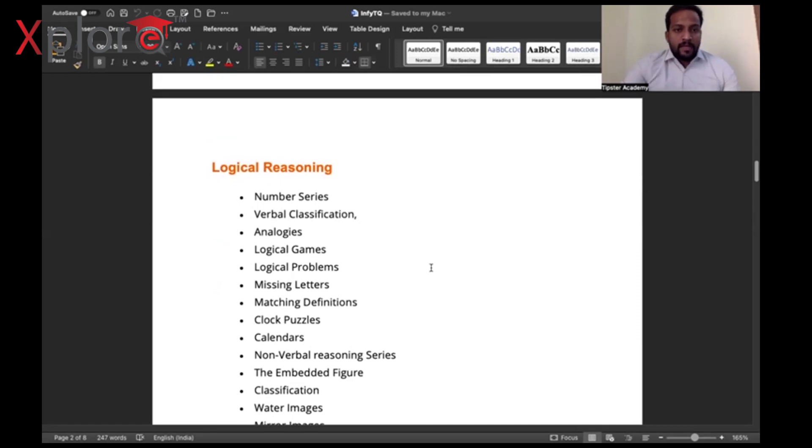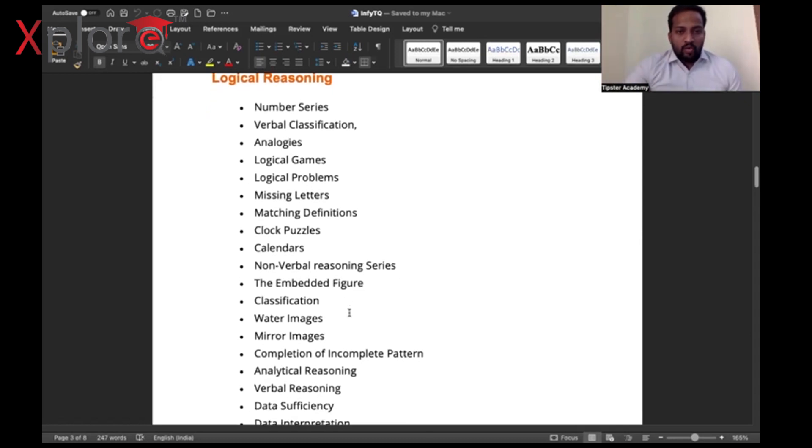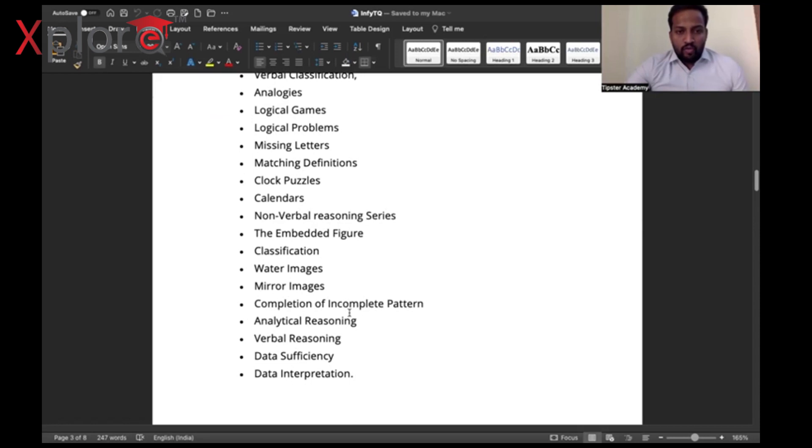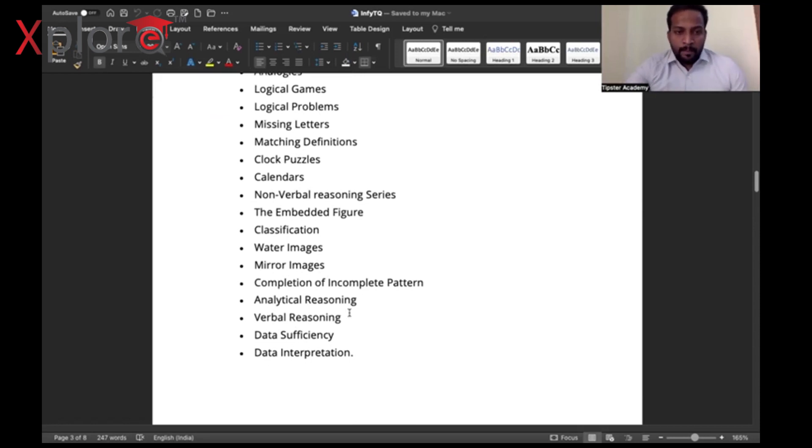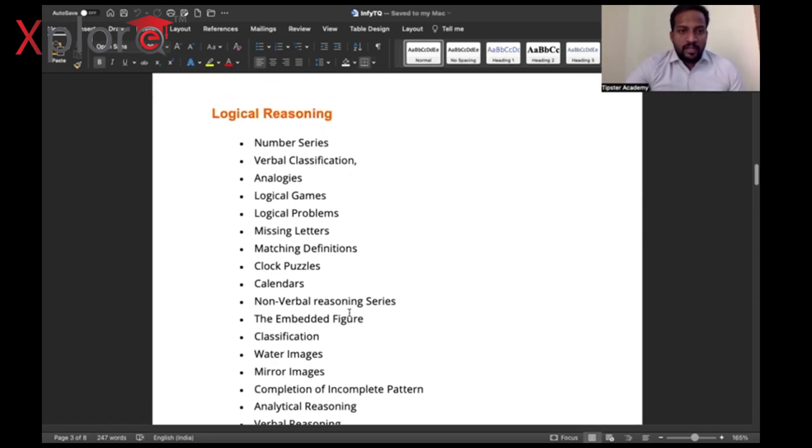Should I go through them one after another? Number series as we know, verbal classification is just like analogy questions where you find a link in one pair and apply the same logic for the next pair. Logical games, logical problems which means patterns you may get, missing letters, matching definitions, clock puzzles, the mirror image of clock and what time it shows when in mirror, calendars, non-verbal reasoning series, embedded figures, pattern again, classification, data interpretation, data sufficiency which are very important.